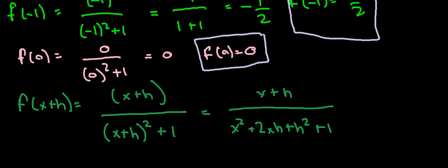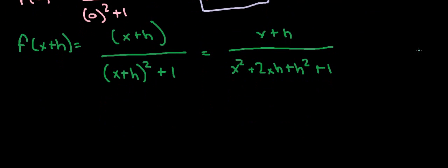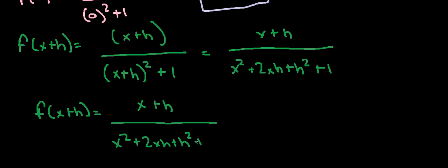So this is our f of x. So f of x plus h is equal to x plus h over x squared plus 2xh plus h squared plus 1. And this is our final answer.